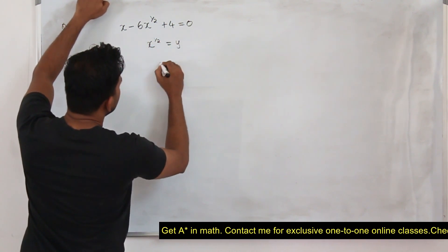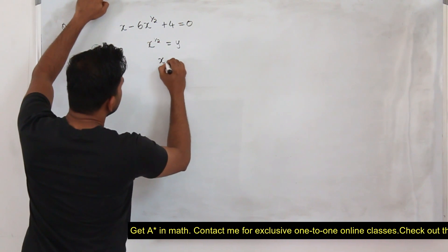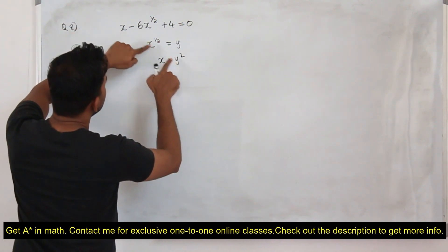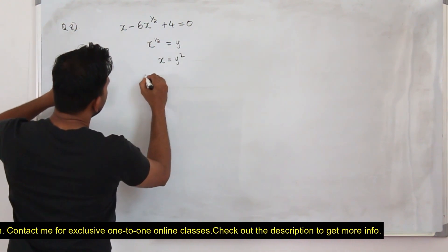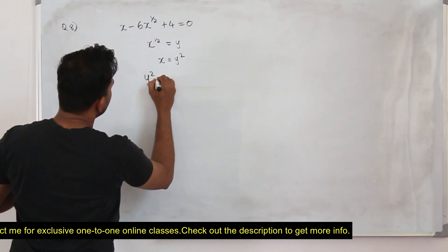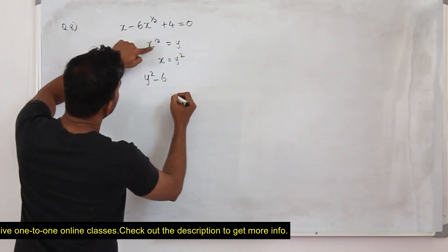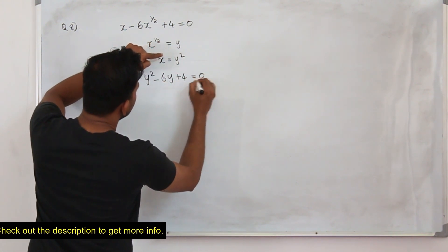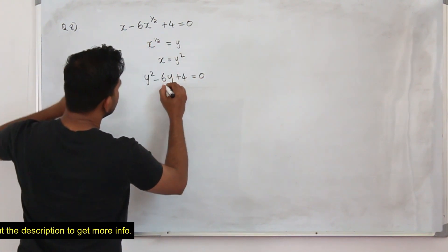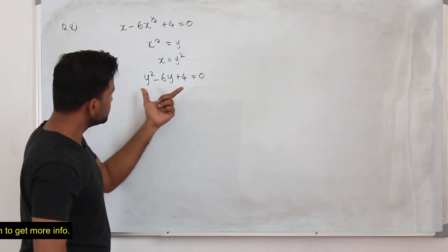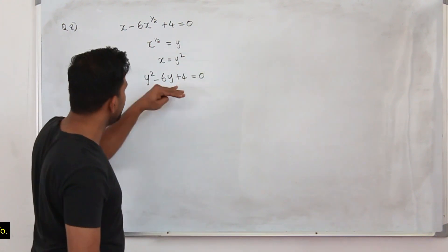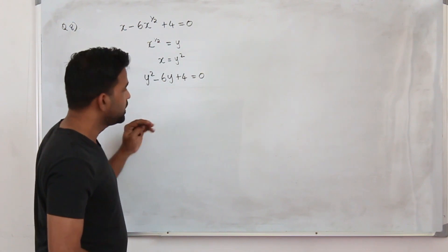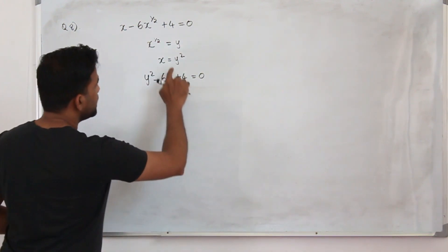...and square both sides, your x will be y squared. When you substitute in here, x is y squared, minus 6 times x to the power half is y, plus 4 equals zero. We now have the quadratic equation y squared minus 6y plus 4 equals zero, and we know how to solve this.